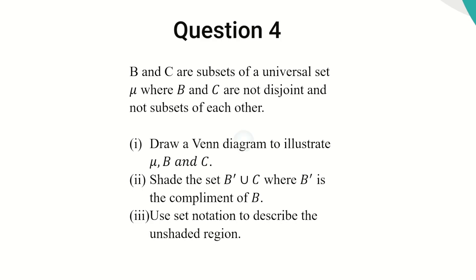B and C are not disjoint — take notice of 'not disjoint' — and no subsets of each other. We have to draw a Venn diagram to illustrate mu, B and C, and then shade the set B prime union C. B prime represents the complement of B. Then we have to use set notation to describe the unshaded region.